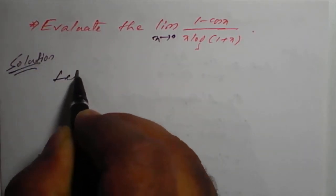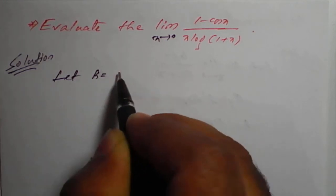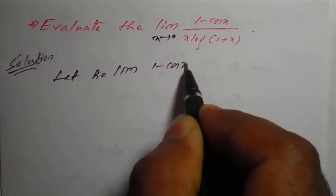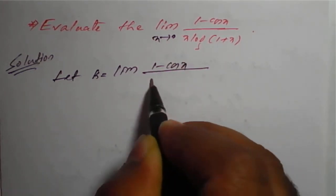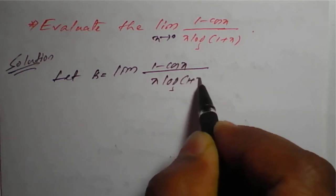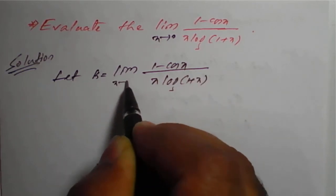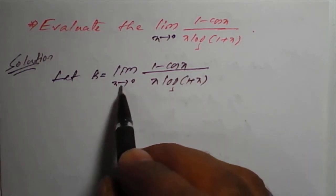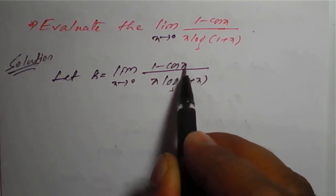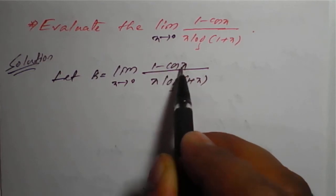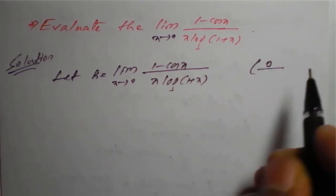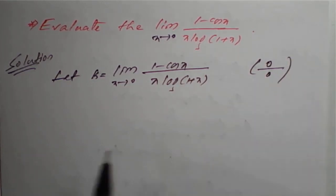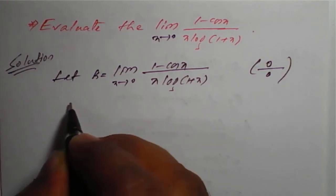Let k be equal to the limit of 1 minus cos x divided by x into log of 1 plus x, as x tends to 0. Now, if we apply x equals 0: cos 0 is 1, so 1 minus 1 is 0 in the numerator; and 0 times anything is 0 in the denominator. So this is a 0 by 0 form, and we can apply L'Hôpital's rule.